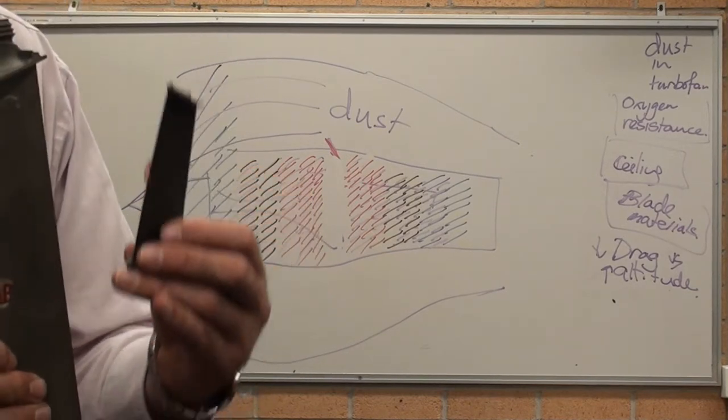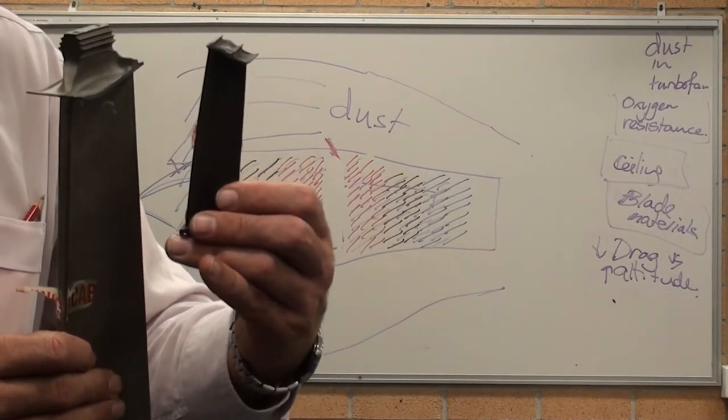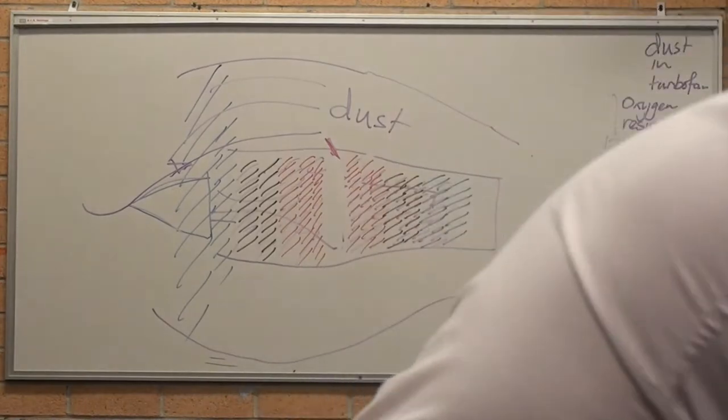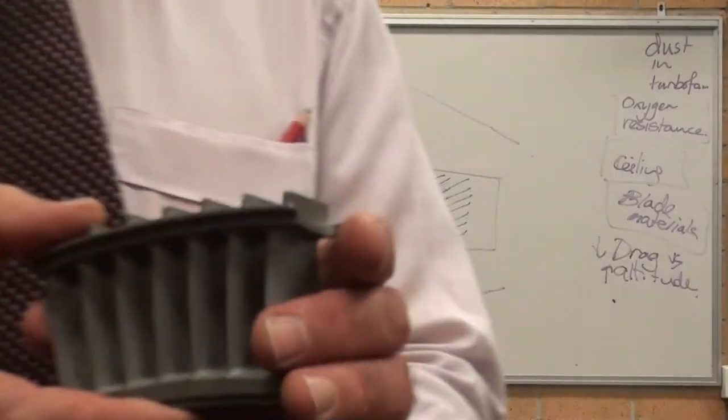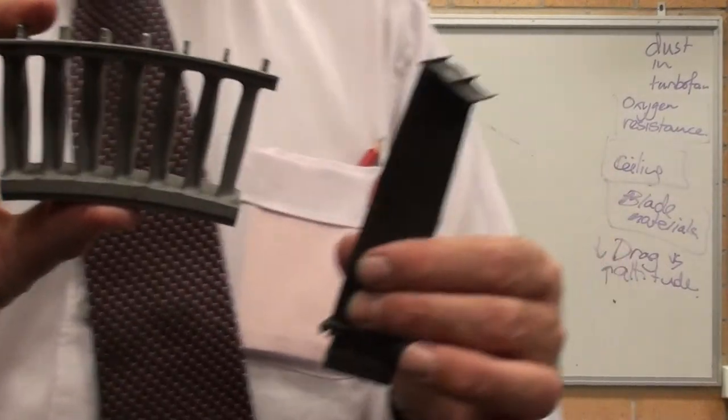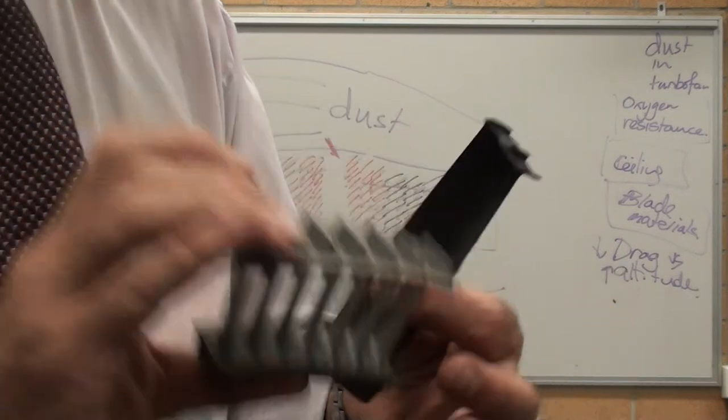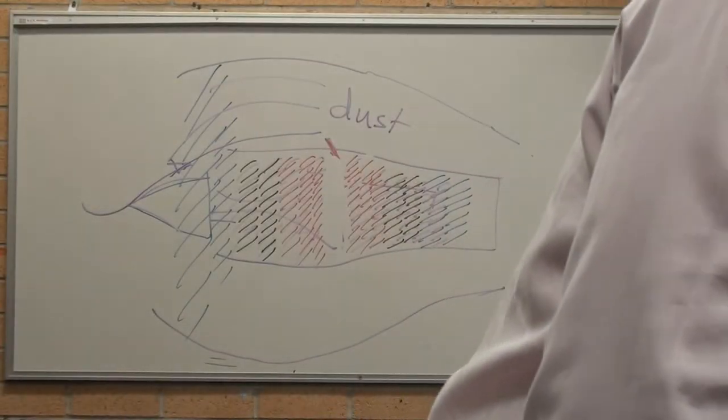It's smaller because the inside of the engine gets bigger to improve the compression of the gas. These things here are the high pressure compressor blades. So we've got three different blade sizes going through.